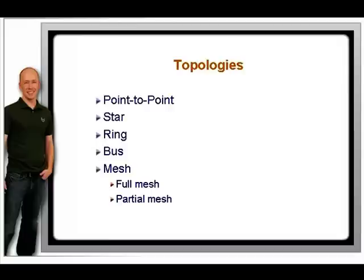A full mesh is a topology with multiple point-to-point connections that connect each location to the others. The advantage is that you can send data directly from any location to any other location instead of having to send it through a central point, and there are more options for sending if one connection fails. The disadvantages are that it is expensive and complex to implement. You can compromise and build a partial mesh, where only some locations are connected to the others.